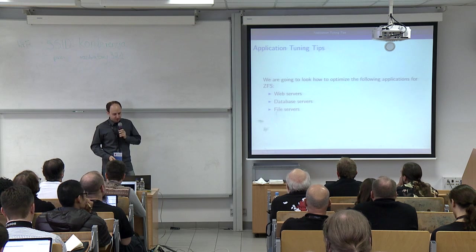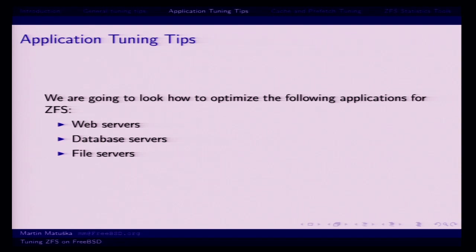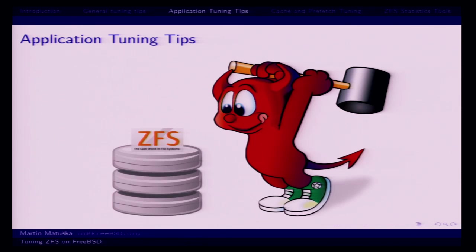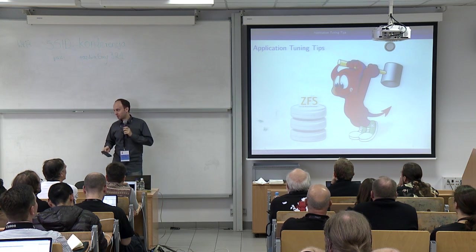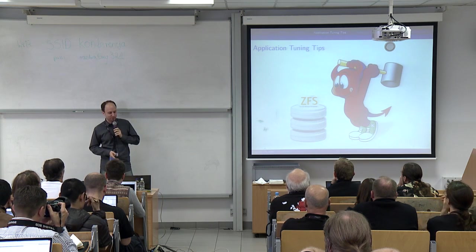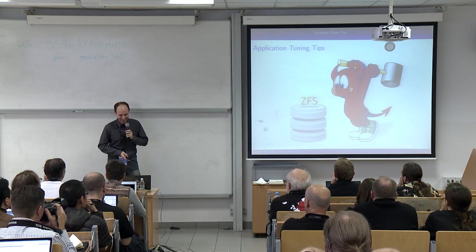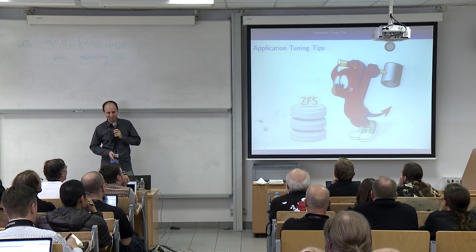Now for application tuning tips. We'll look at how to optimize for the following applications: web servers, database servers, and file servers. Before going to hardcore optimization — when nothing else helps — these are the possibilities for how it could be done.